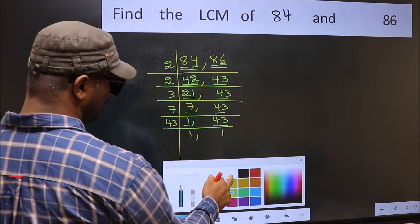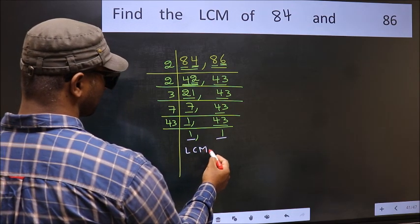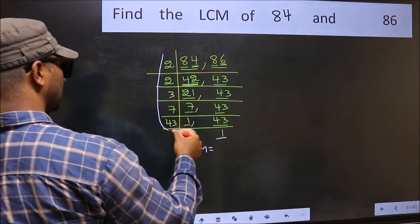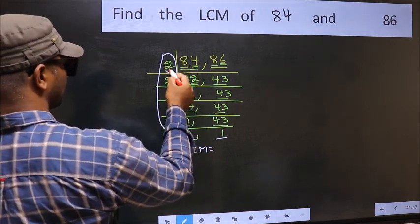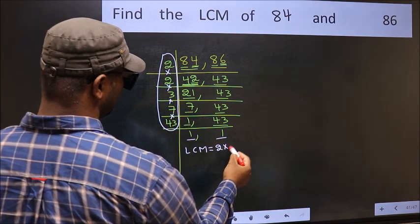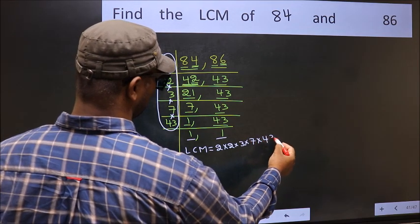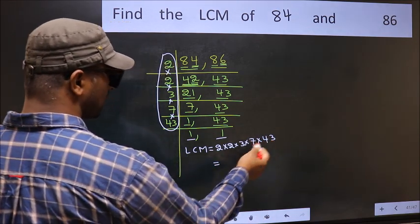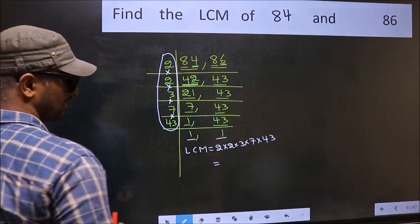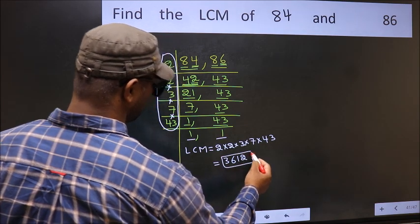We got 1 in both places. So our LCM is the product of these numbers. That is 2 into 2, into 3, into 7, and finally into 43. When we multiply these numbers, we get 3612 as our LCM.